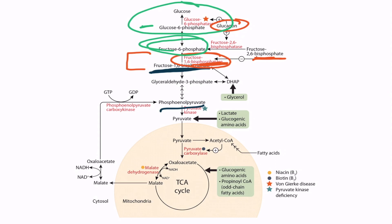Also notice that this reaction is upregulated by glucagon, which makes sense. When the body is in need of glucose, glucagon is increased, which then increases the activity of glucose-6-phosphatase. Finally, notice that a deficiency of this enzyme, noted by the star right here, results in von Gierke disease. We discuss this more in the video on glycogen metabolism.